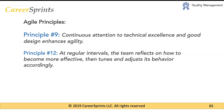The next principle says at regular intervals, the team reflects on how to become more effective, then tunes and adjusts its behavior accordingly. This talks about how teams come together during a retrospective and reflect on the quality of the work they are doing, what action plans emerge, and how they apply them to enhance quality. We will look at how these two principles are applied in agile as we go along in this presentation.